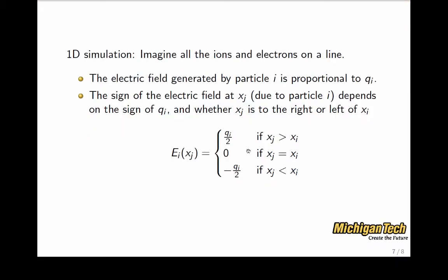For example, the electric field at some location, xj, if it's to the right of xi is equal to qi over 2. If it is at the xi location exactly, its contribution to the electric field is zero. Whereas, if it's to the left of xi, the electric field is minus qi over 2.